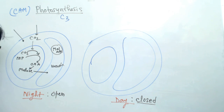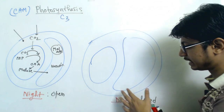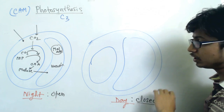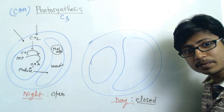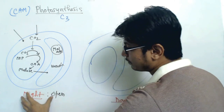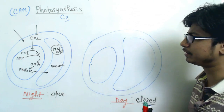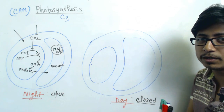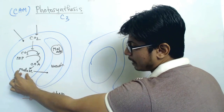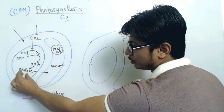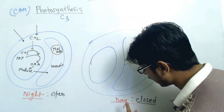Malate is stored inside the vacuole at nighttime. The reason is that in the daytime the stomata will be closed, so there won't be any incoming carbon dioxide, but we still need to carry out photosynthetic reactions. So in the nighttime, whenever stomata open, the plant takes in as much carbon dioxide as needed, converts it into malate — a chemical form where carbon dioxide is stored as an extra carbon — and stores that malate in the vacuole.